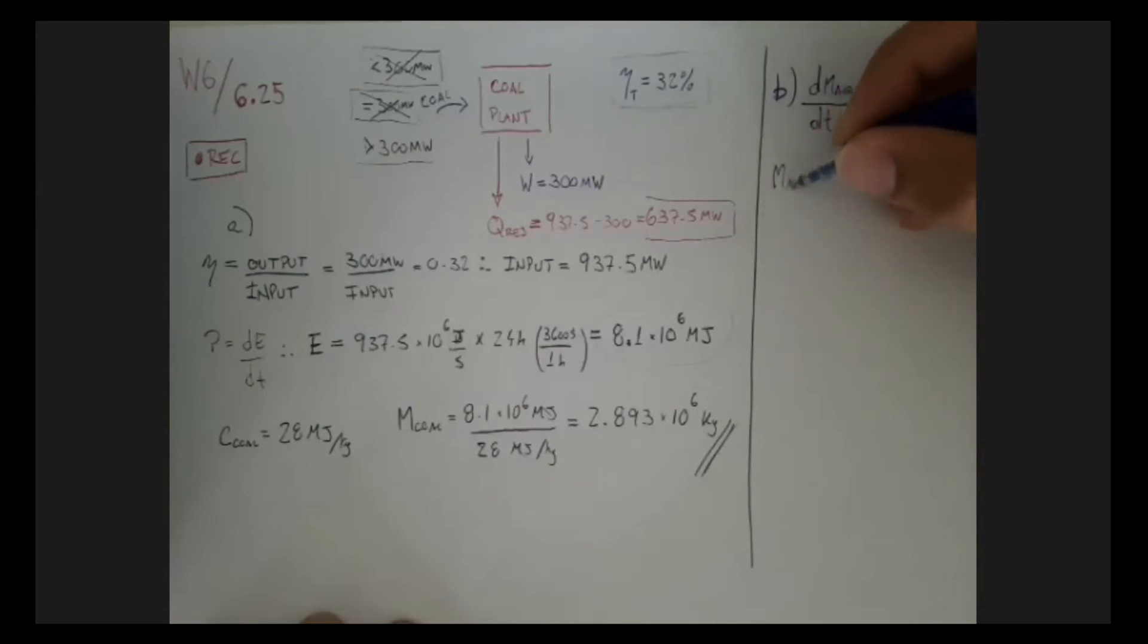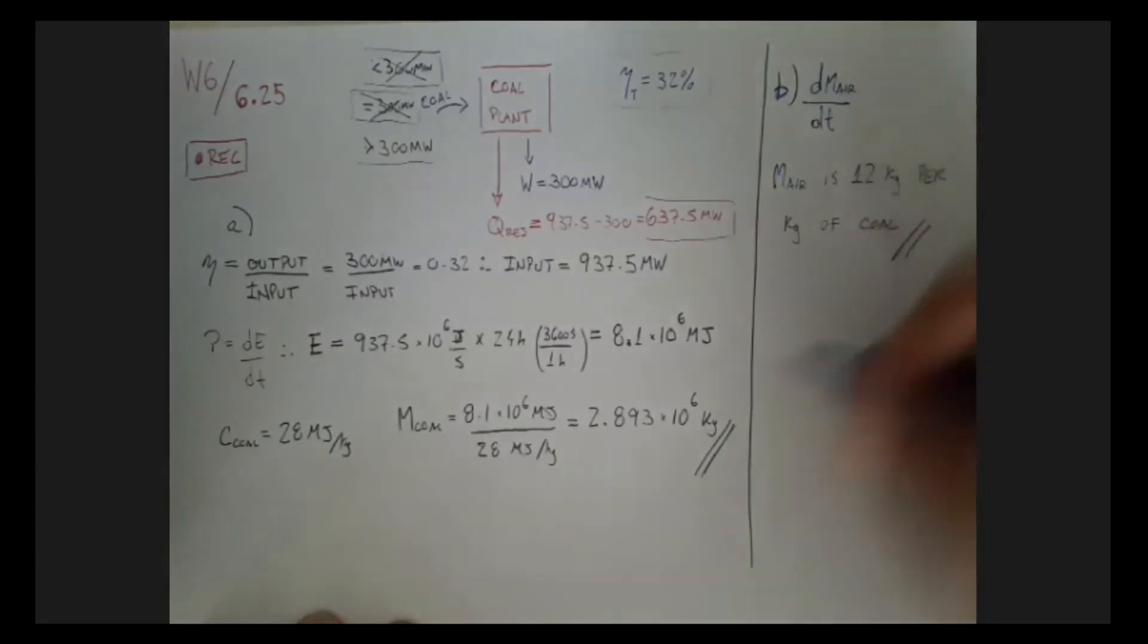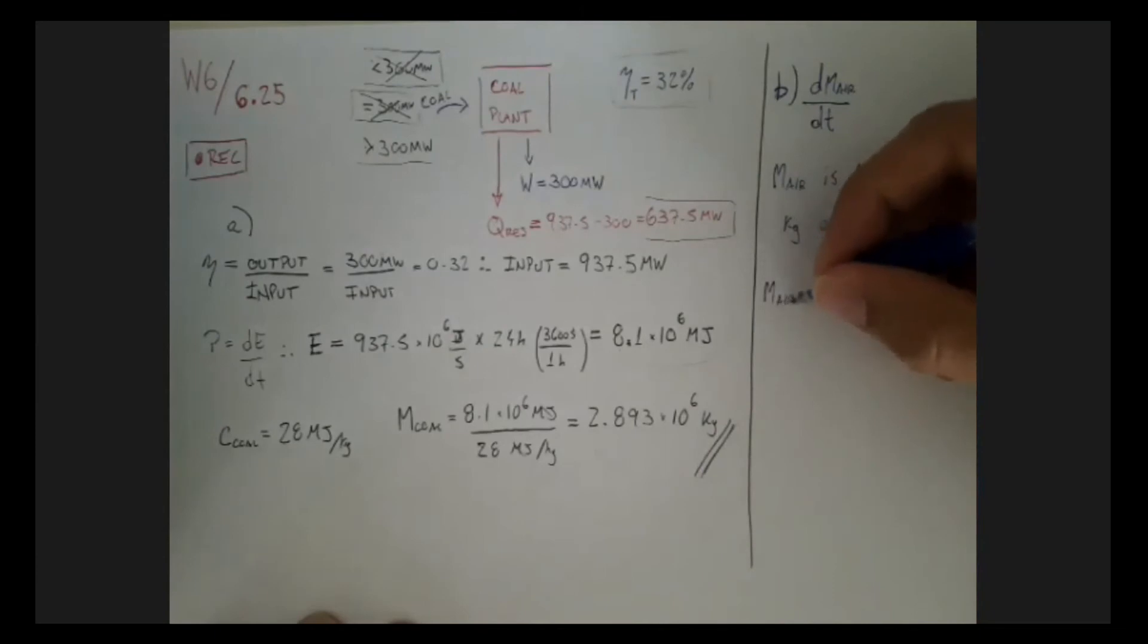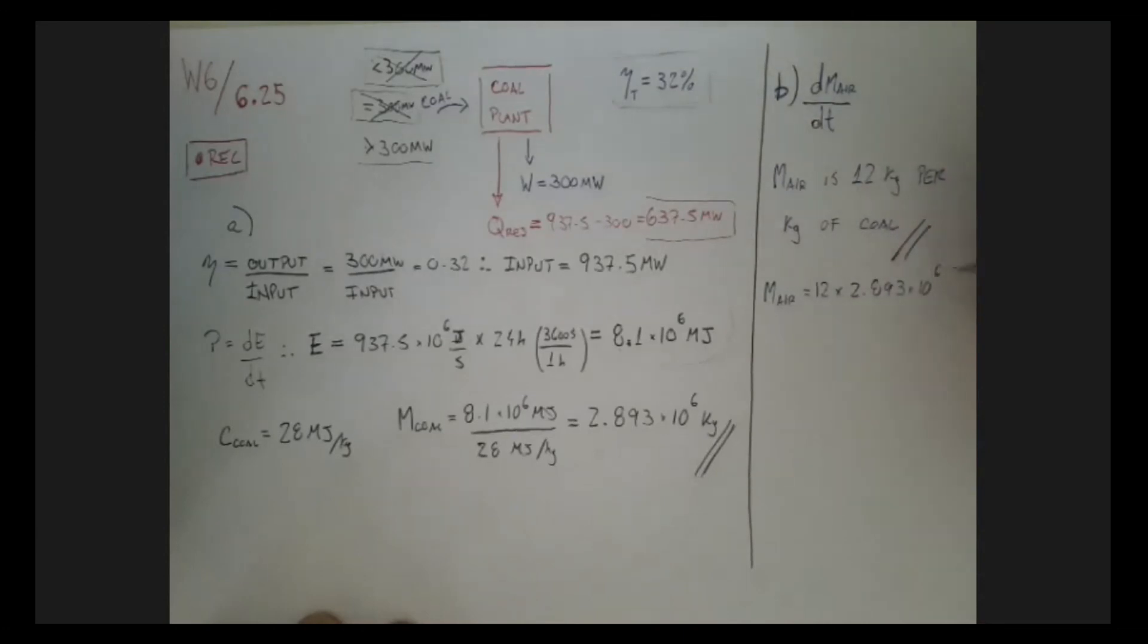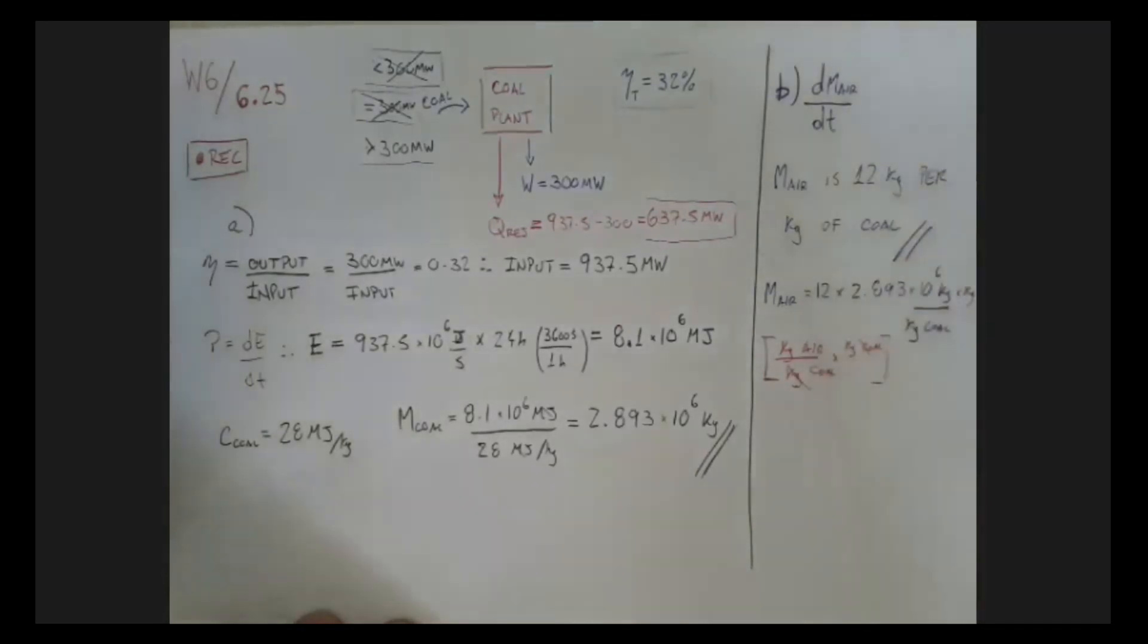We know that the mass of air required is 12 kilograms per kilogram of coal. So if we have this amount of kilograms of coal, just multiply one by the other. The mass of air will be 12 times the 2.893 times 10 to the 6. And note the units here. This is kilograms of air per kilograms of coal times kilograms of coal. So we're doing kilogram of air per kilogram of coal multiplied by kilogram of coal, so we've got kilograms of air.